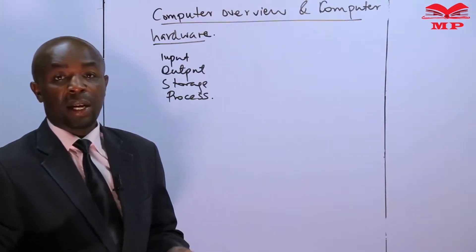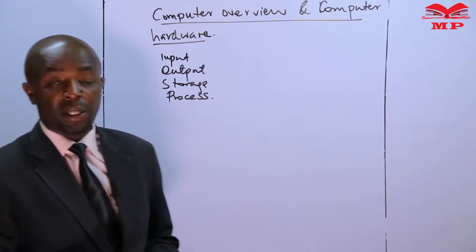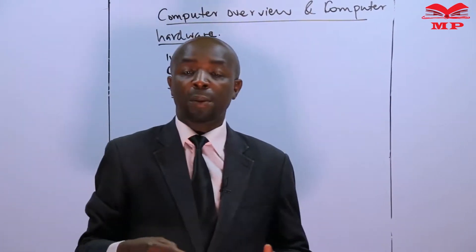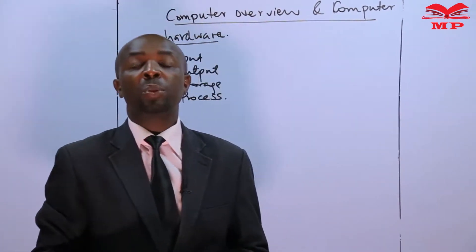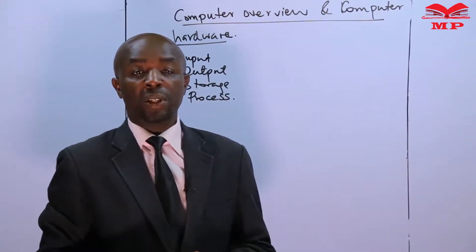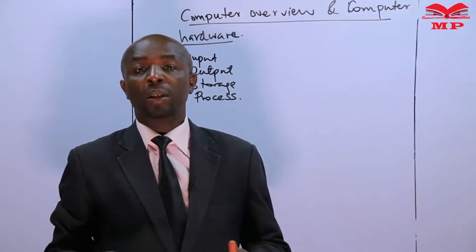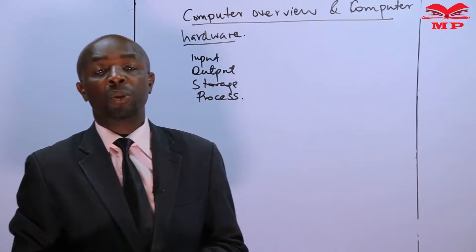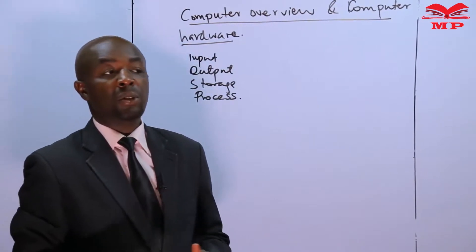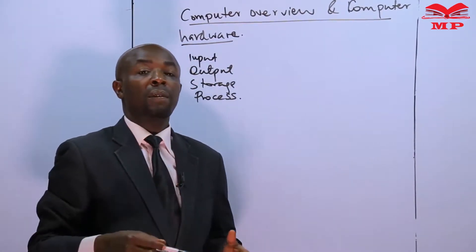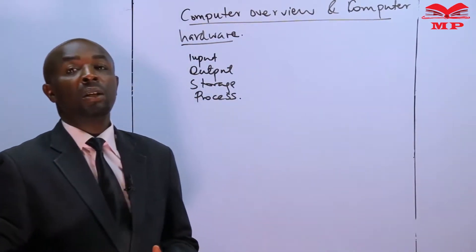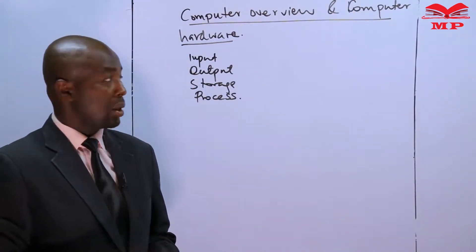A computer system is an electronic device that accepts data as input, processes the data, gives the output, then stores the data that has been processed.